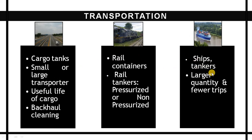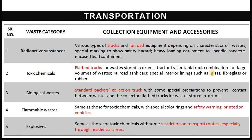Collection equipment and accessories vary by waste category. Radioactive substances are collected through truck and railroad equipment depending on the waste characteristics. Toxic chemicals must be containerized and transported on flatbed trucks for waste stored in drums. Biological waste requires standardized packing, collection by truck, and special precautions.